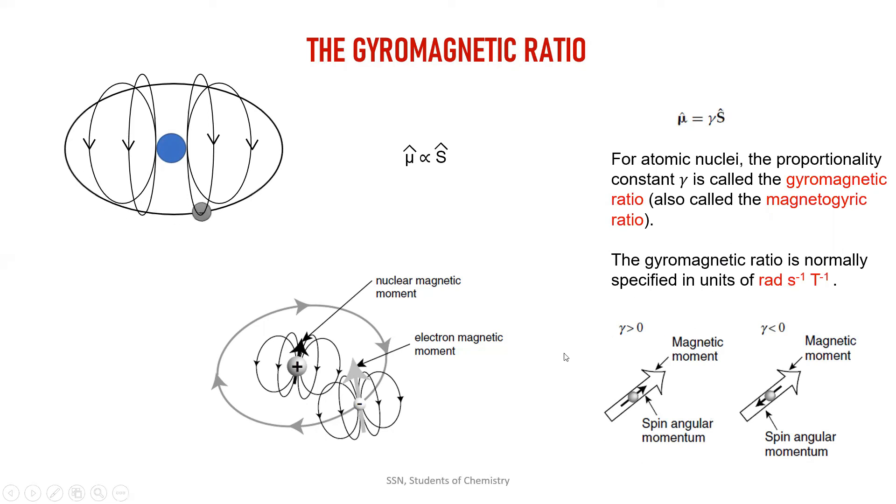That's why here I am representing in this image, gamma is positive, my spin angular momentum will align along the magnetic moment. If my gamma is negative, my spin angular momentum will align opposed to the magnetic moment.